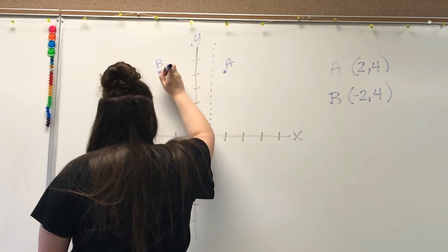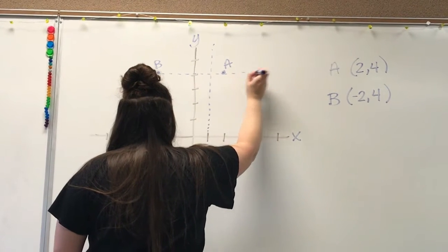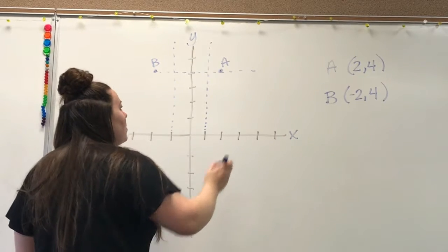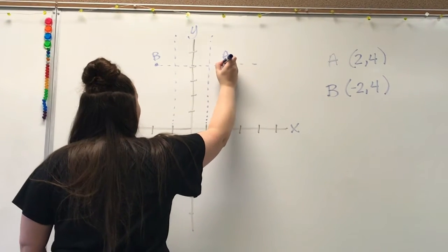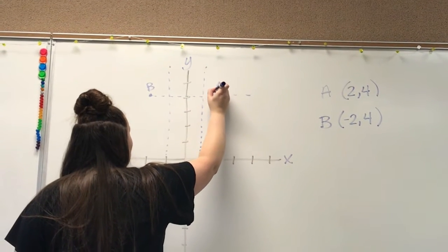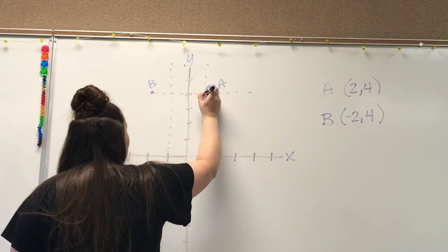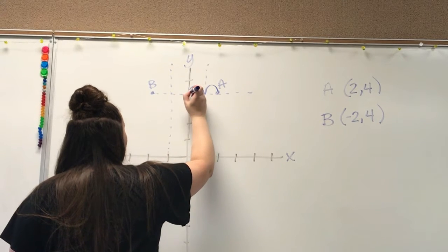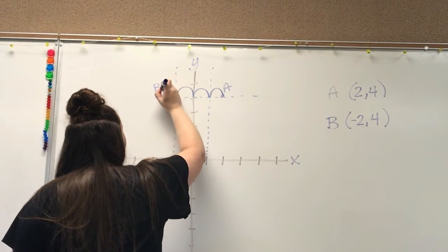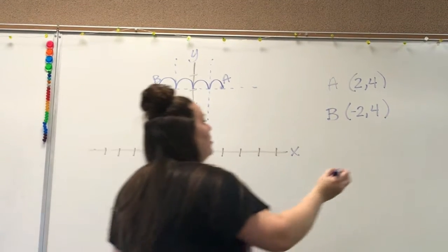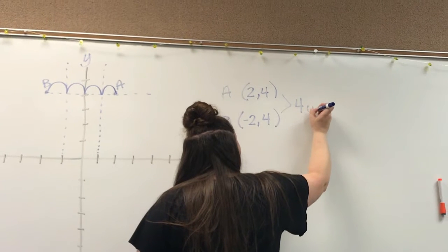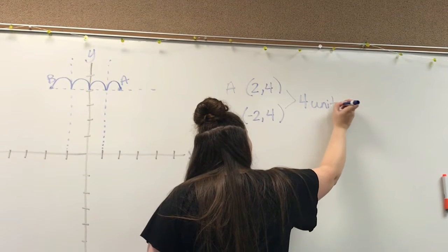On your paper you'll see all these grid lines. I didn't want to draw all the grid lines, but there's the grid lines. Start on the dot and every time there's an intersection, that's where you need to land. One jump, two jumps, three jumps, four jumps. These two points are four units apart.